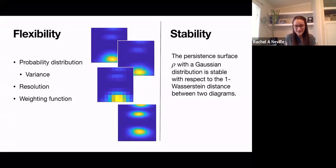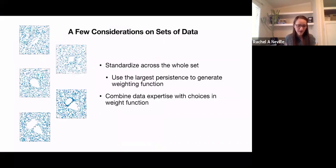And then just to reiterate that this is a stable representation. So this is provably stable. The persistence surface with the Gaussian distribution is stable with respect to the one Wasserstein distance between two diagrams. So that means that this is a good choice to use for data. And then just a few considerations. If you're using this on sets of data, it's important to standardize across the whole set so that your persistence images all have the same underlying scale. You might use the largest persistence across the whole set to generate the weighting function. And you might consider what expertise you have about the data and choices of the weighting function.